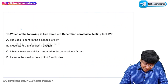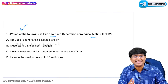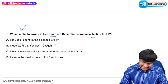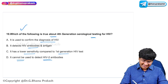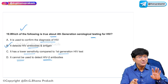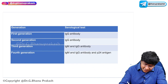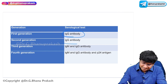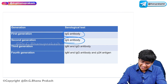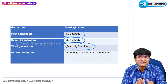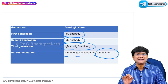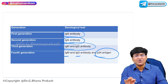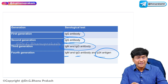Nineteenth question: which is true about fourth-generation serological testing for HIV? The correct answer is: it detects both HIV antibody and antigen. First and second generation tests detect only IgG antibody. Third generation detects IgG and IgM antibodies. Fourth generation detects IgG and IgM antibodies plus the P24 antigen, allowing earlier detection.